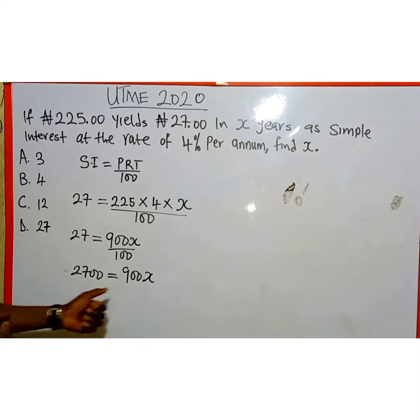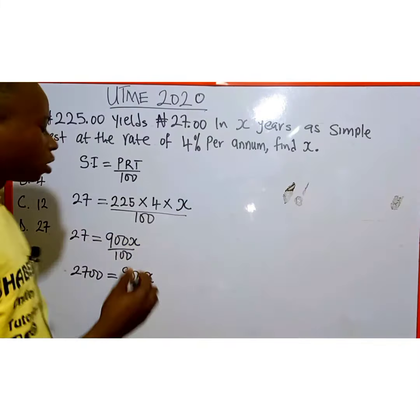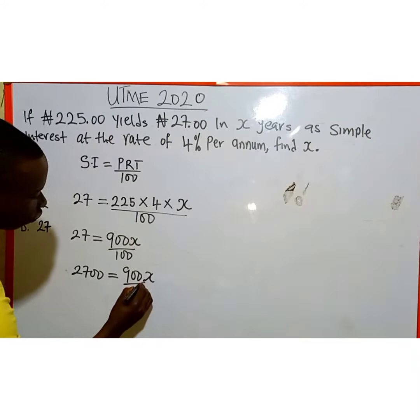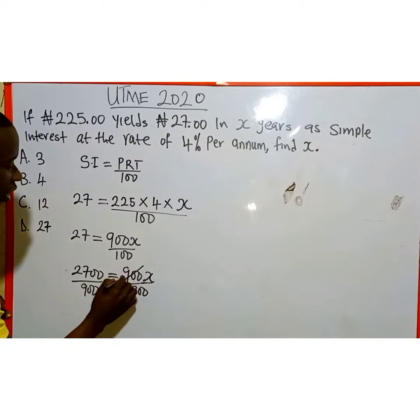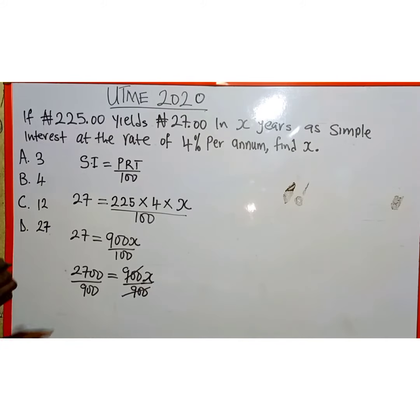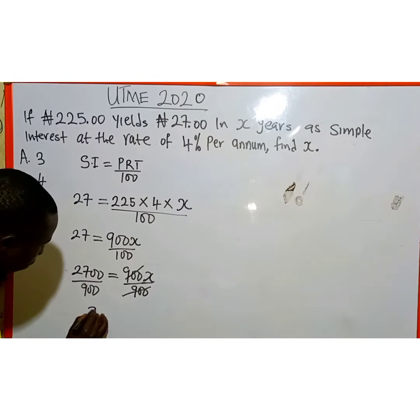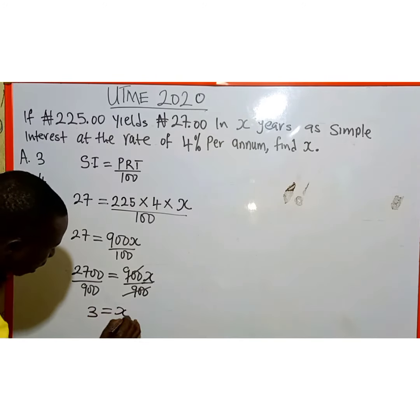Remember, we are looking for the value of X. So we divide through by the coefficient of X, which is 900. So this 900 can cancel this 900. 2700 divided by 900 equals 3, which equals X.